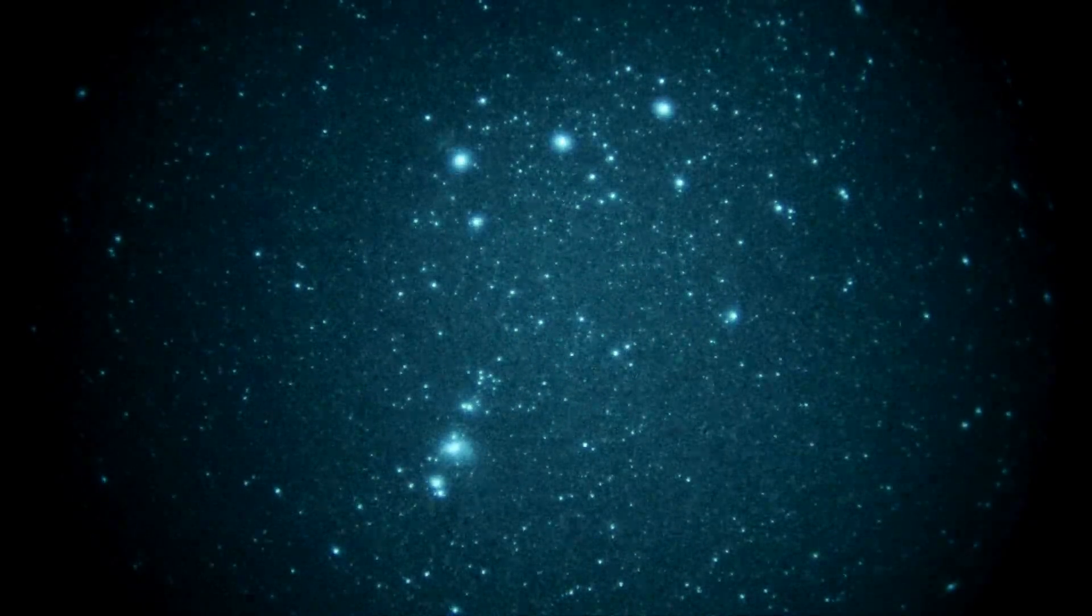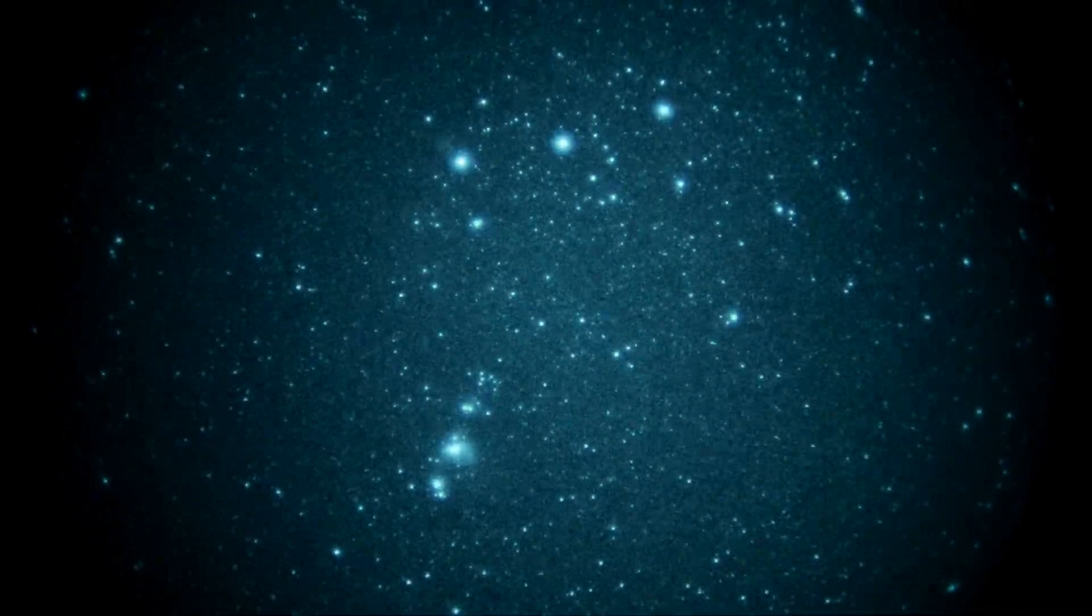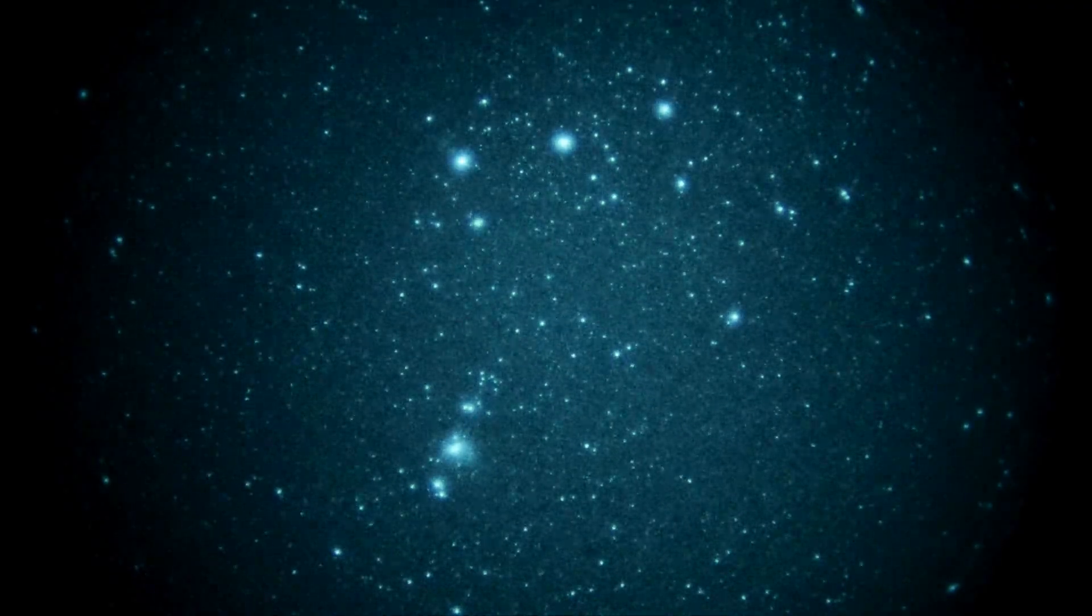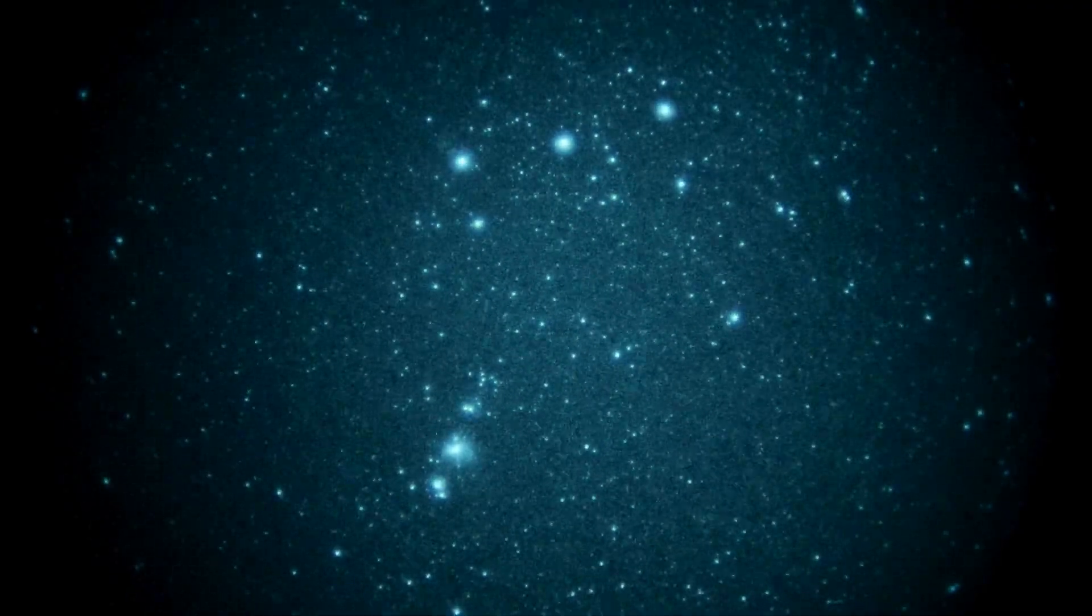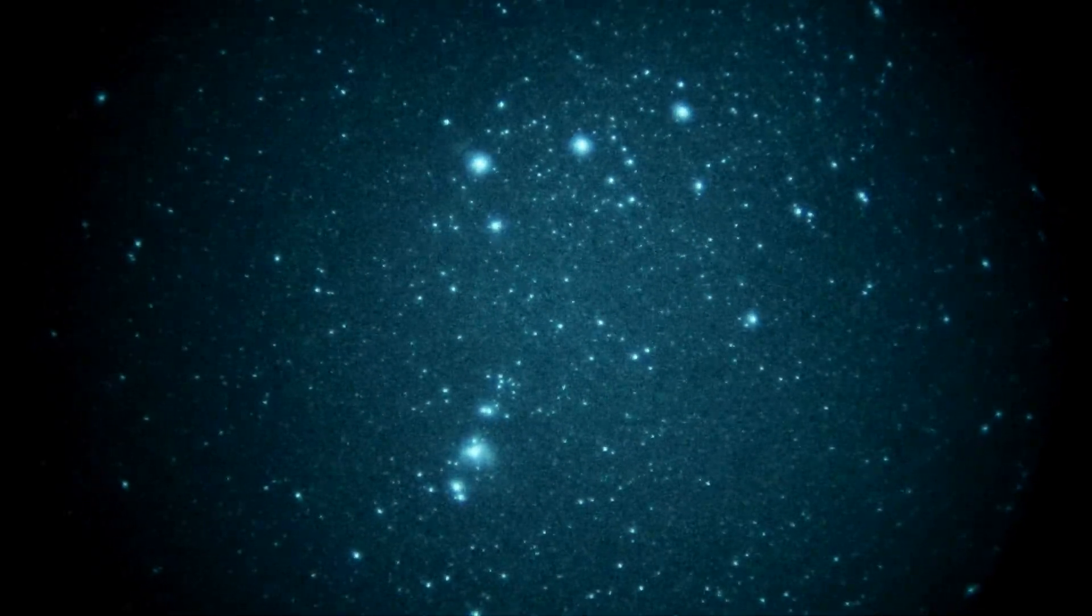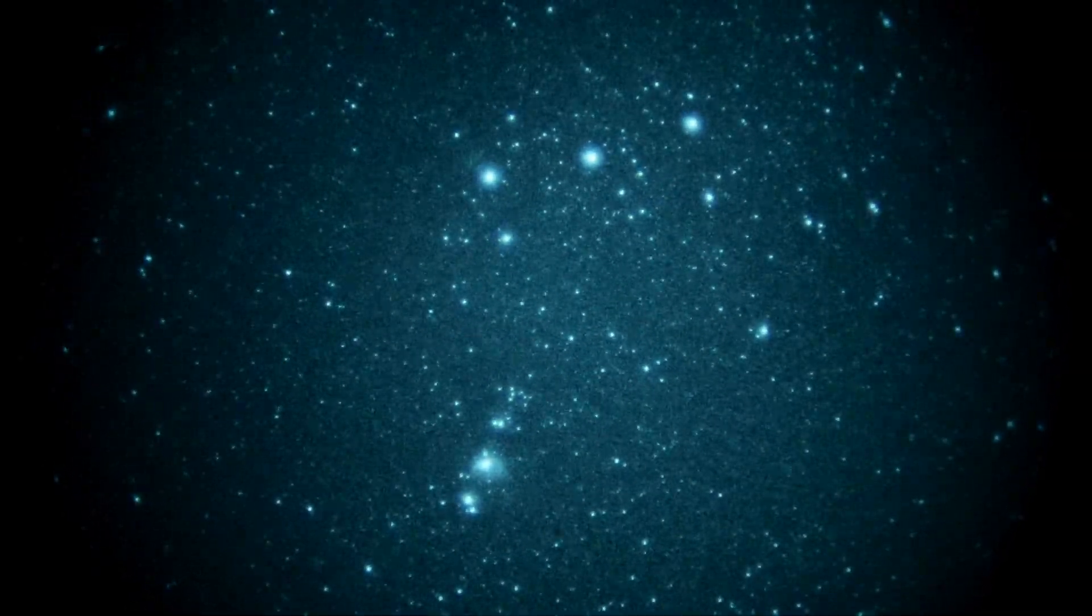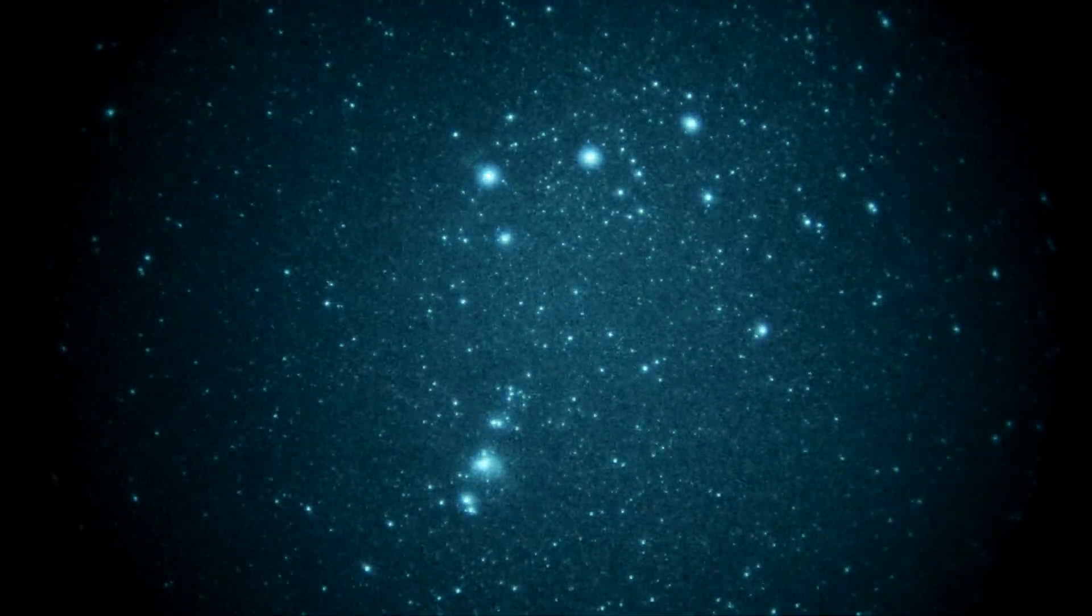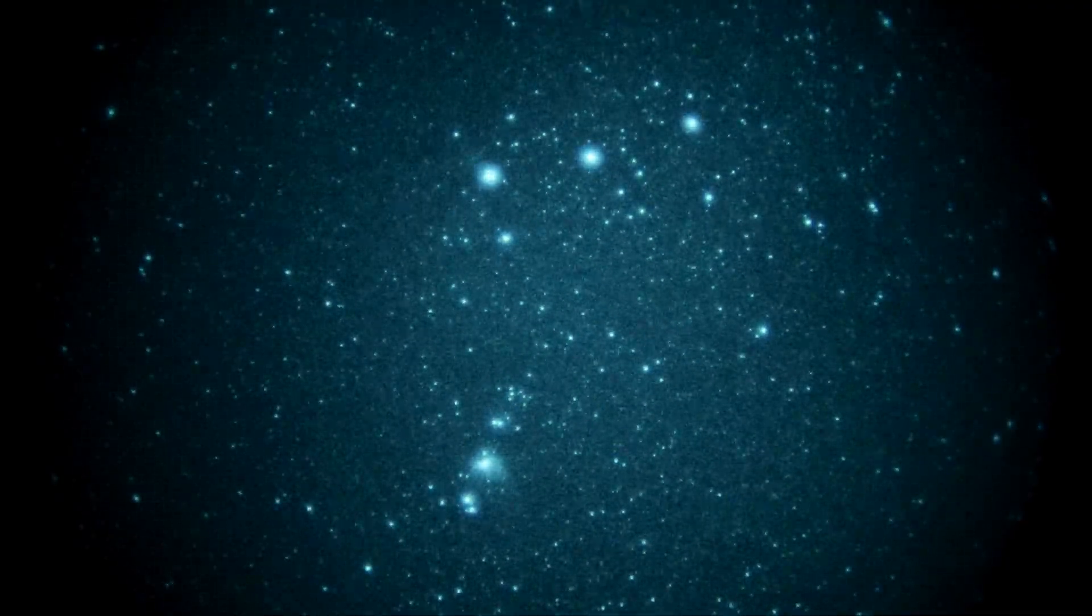The camera is a Panasonic GH3 set to 60th of a second shutter, ISO is 400. We're staring at the sword and the belt of Orion right now. The upper three bright stars going across from left to right are Alnitak, Alnilam, and Mintaka.